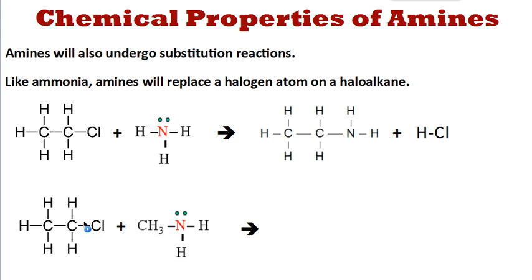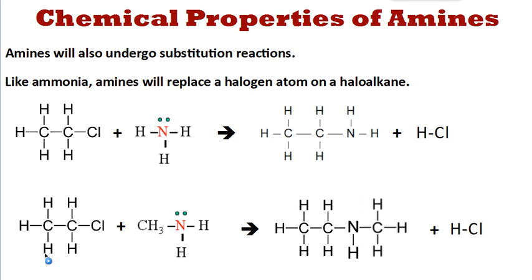The C–Cl bond is broken, so we have a free bonding space on this carbon. A hydrogen is removed, giving a free bonding space on the nitrogen, and that's where the carbon and nitrogen bond to each other. So we end up with the CH3 group — the methyl group — as part of the new organic chemical. The ethane part of the haloalkane is still here, and that carbon is now bonded to the nitrogen from the CH3NH2 group. The methyl group is still attached, and we get HCl forming. So this product is a secondary amine, and again hydrogen chloride — a hydrogen halide — is formed.